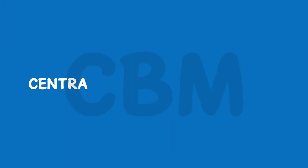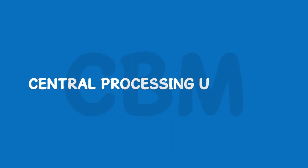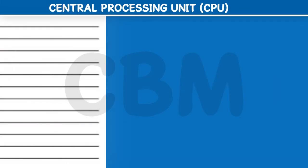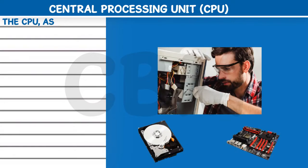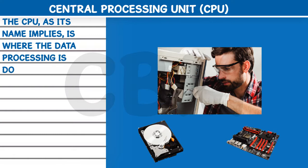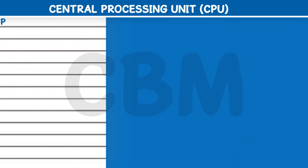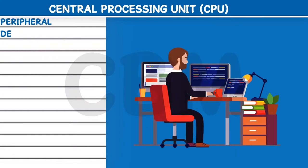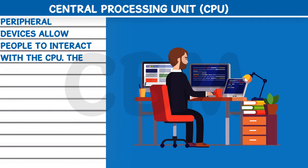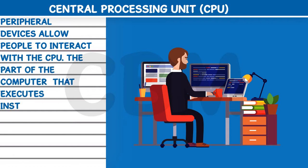Central Processing Unit (CPU). The CPU, as its name implies, is where the data processing is done. Peripheral devices allow people to interact with the CPU. The part of the computer that executes instructions is known as the central processing unit.